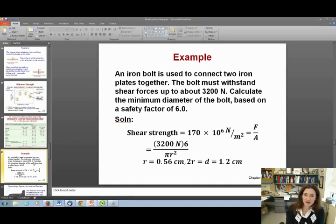We're going to pretend that force is six times as large as 3,200 newtons, just to be safe. So 3,200 times six, divided by the cross-sectional area of your bolt, pi r squared, because your bolt's cross-section is a circle. Then you solve for r. That gives you 0.56 centimeters, or a diameter of 1.2 centimeters, so you know how large your bolts need to be.